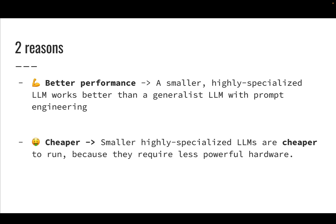And second, and important as well, is that the final model is smaller, which means that it's cheaper to run. That's a very important thing, because LLMs are highly parametric — they have billions of parameters — so reducing the amount of parameters really makes a difference in terms of operations and cost. So these are the two key reasons: better performance and better economics.